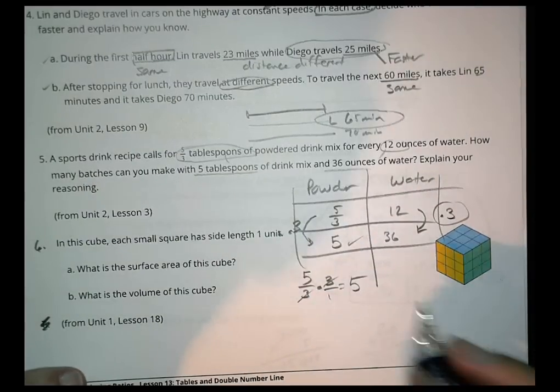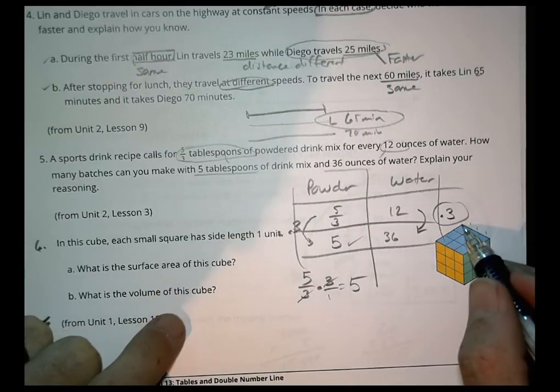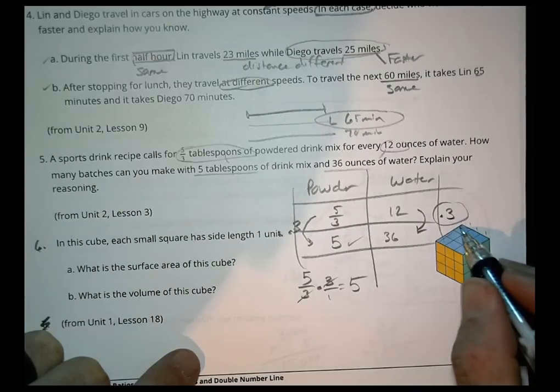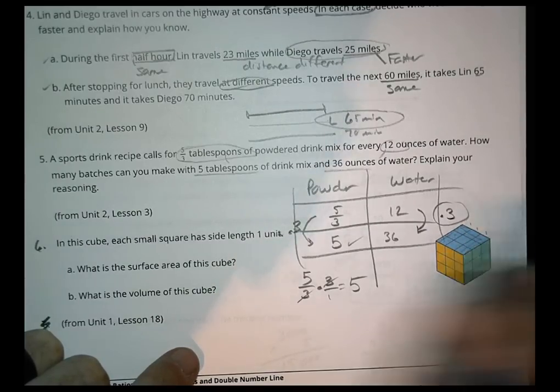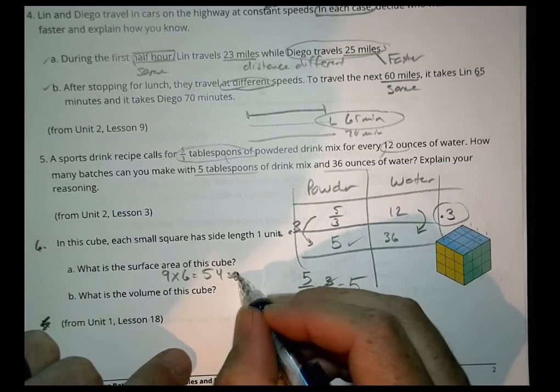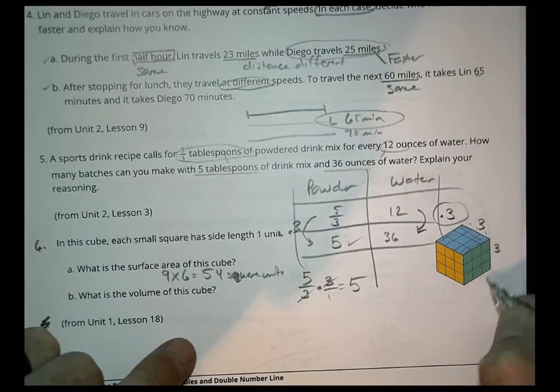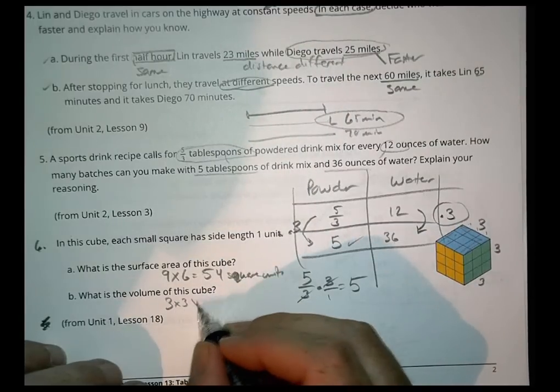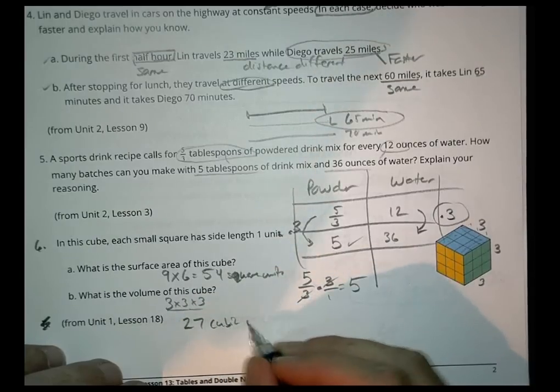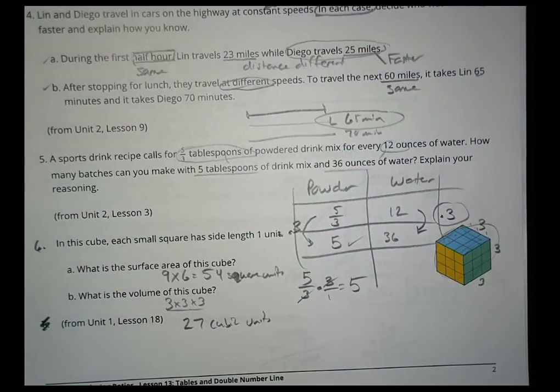Our last one, review from the first unit. Here's a cube with unit length of one for each little square. What's the surface area? Surface area is going to be what that is times 6 faces. We have a 3 by 3, which is 9 for each face, and there are 6 faces. So we have 54 square units. The volume is going to be length times height times width. It's 3 times 3 times 3, which is 27 cubic units for the volume. That's it for today. We will see you next time.